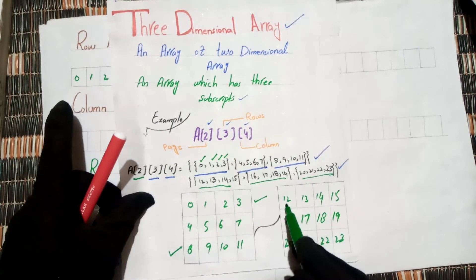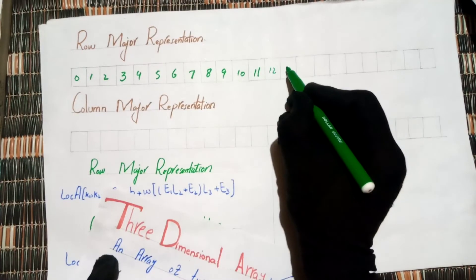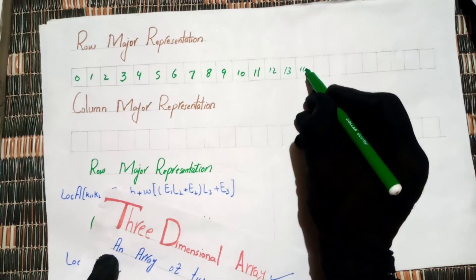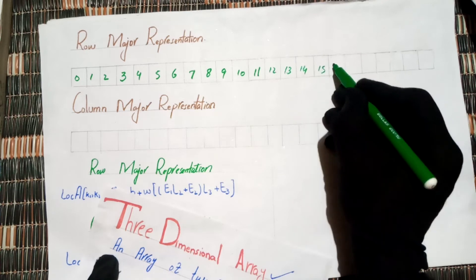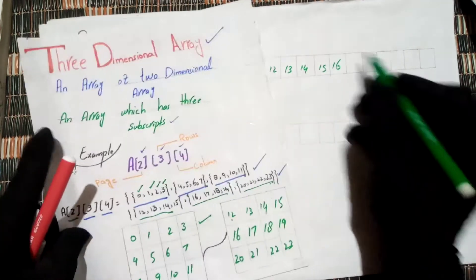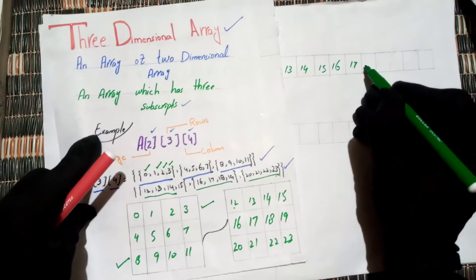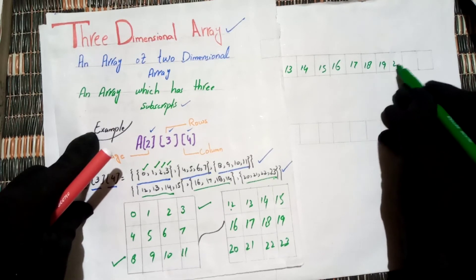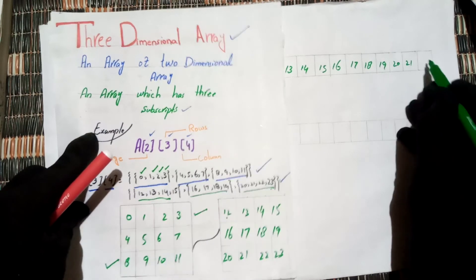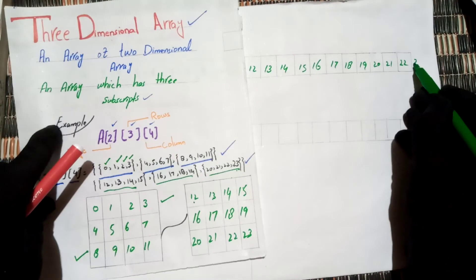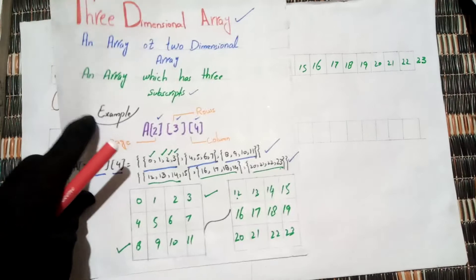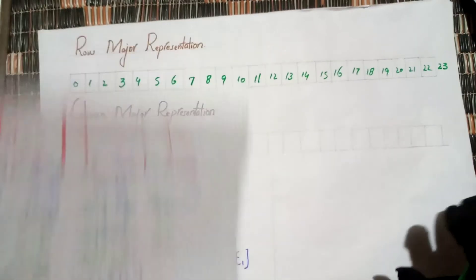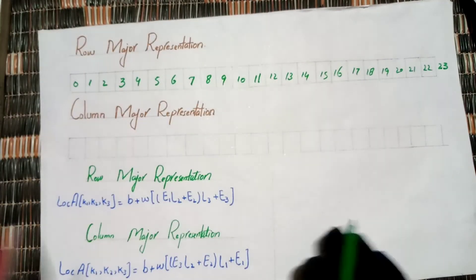Now we start with the second matrix. The first row: 12, 13, 14, 15. The second row: 16, 17, 18, 19, 20. The third row: 20, 21, 22. And the last element of the second matrix is 23. This is the row-major representation.